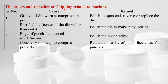Causes and remedies of chipping related to the machine: if a groove of the die bore is damaged at the compression point, polish to the open end, or reverse or replace the die. If barrel dies are used (where the center of the die is wider than the ends), polish the die to make it cylindrical to avoid chipping.